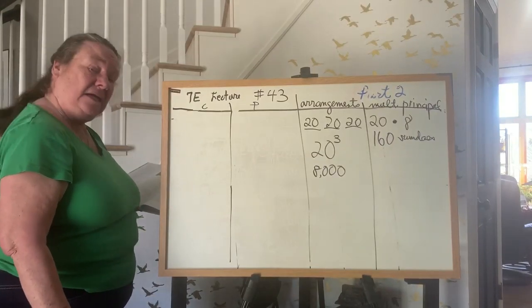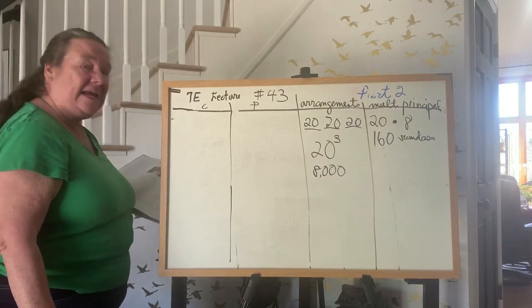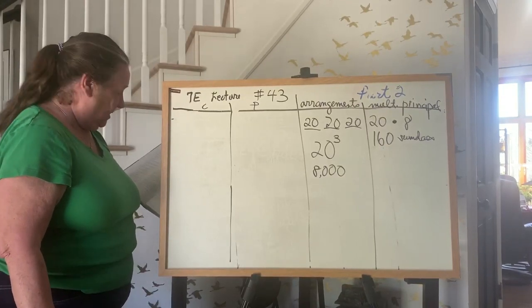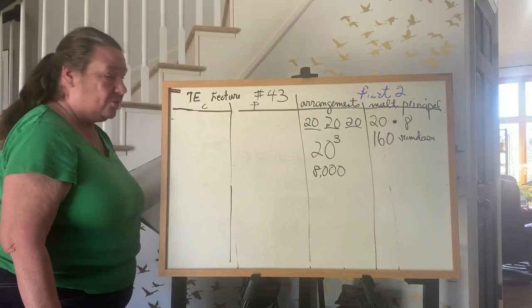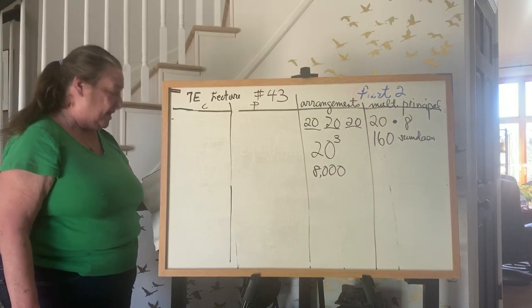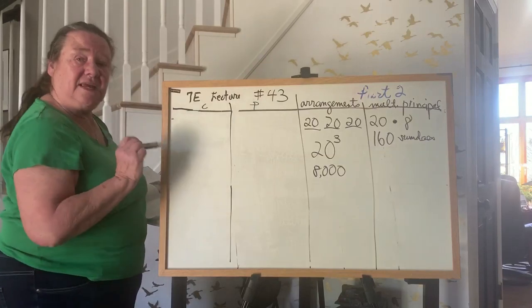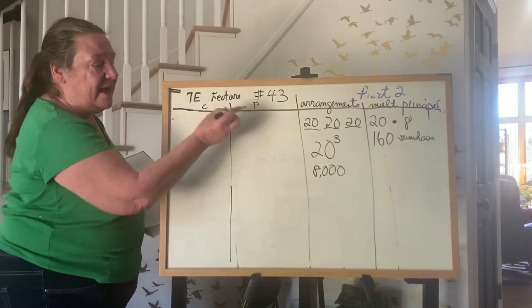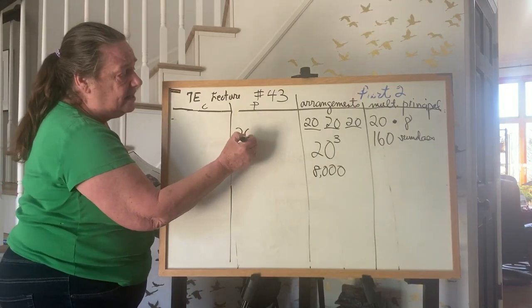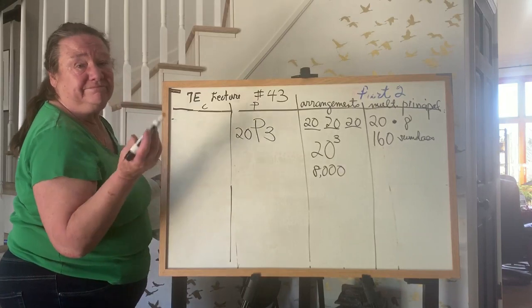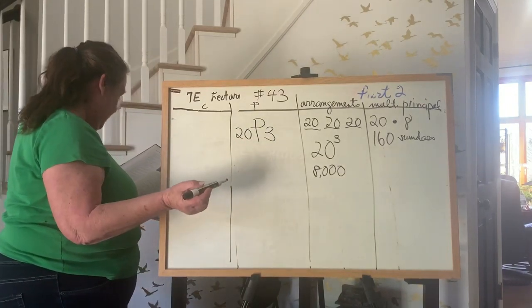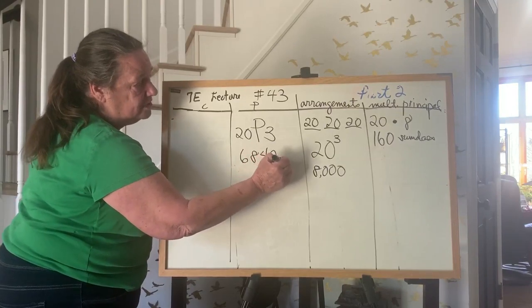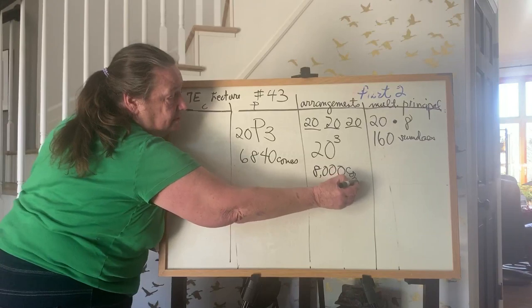The next one is C. Using 20 flavors, how many different triple cones can you have with three different flavors, no repeats, if you specify which one goes on top and which one goes on bottom. So you have to decide, is that a P or a C? I know it's one of them because of the word different. And since it says you want to specify top, middle, and bottom, that's got to be a permutation. So this is 20 permuted three at a time. Couldn't be easier for you. And the answer is 6,840 cones.